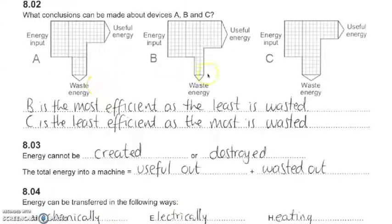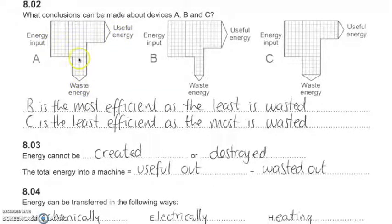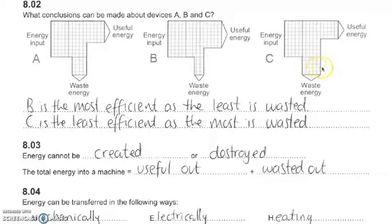We looked at Sankey diagrams before. Remember: the arrow that goes horizontally across is the useful energy, and the arrow that goes downwards is the wasted energy. From these diagrams, B is the most efficient because it has the least amount of wasted energy, whereas C is the least efficient as most of the energy is wasted.